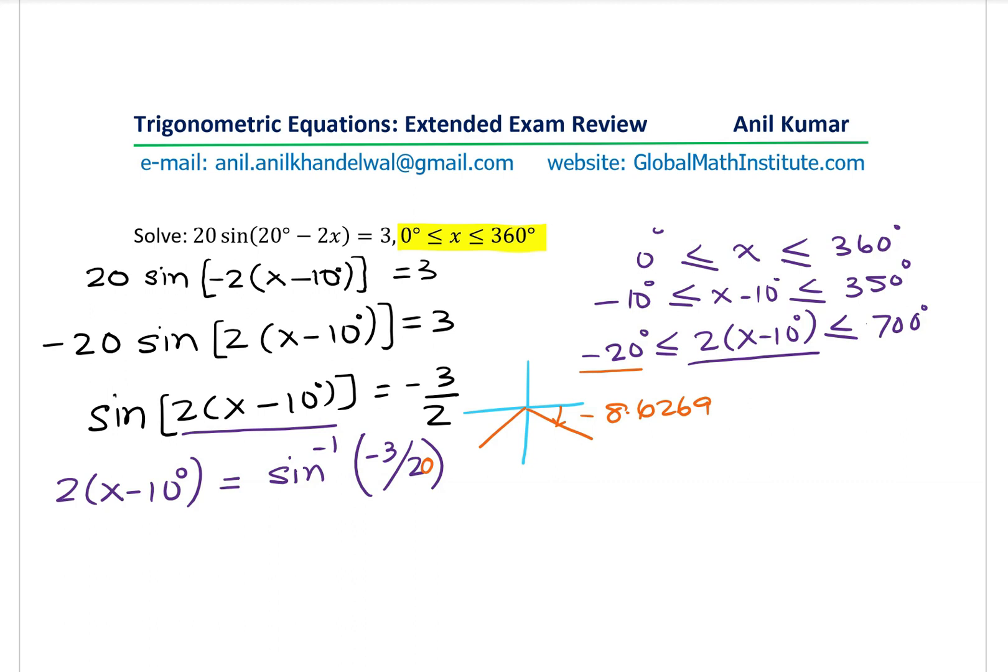What could be the other value? The other value will be this. You can think about the acute angle being 8.6. So this is 180 plus 8.6. So that is how you can look into this particular solution. So the angle which we are looking into is minus 8.627 and the positive angle will be 180 degrees plus 8.627.